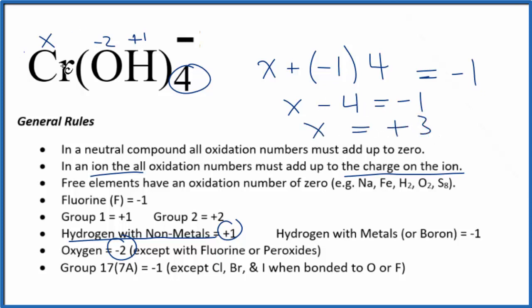So for our chromium here, the oxidation state is going to be a positive 3. And if you add up all of the oxidation numbers here, it's going to equal that negative 1.